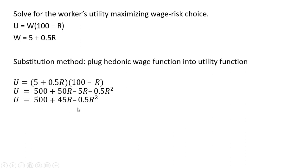We're going to maximize utility by taking the derivative of this utility function with respect to risk, and we get back 45 minus R. We set that derivative equal to 0 and solve for R. R equals 45. We plug this 45 into the hedonic wage function and get the worker's wage at $27.50. So the worker will choose to take a risk of 45 and earn $27.50, and that will maximize the worker's utility.